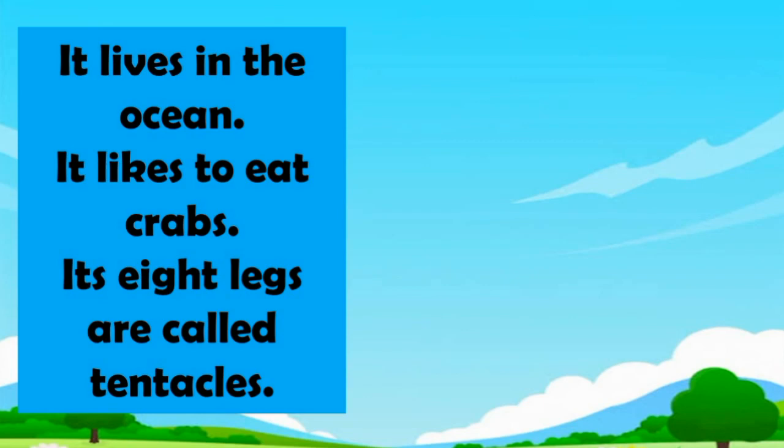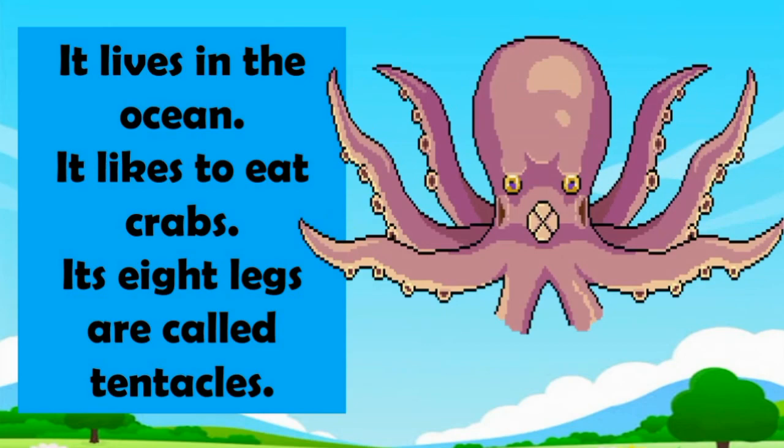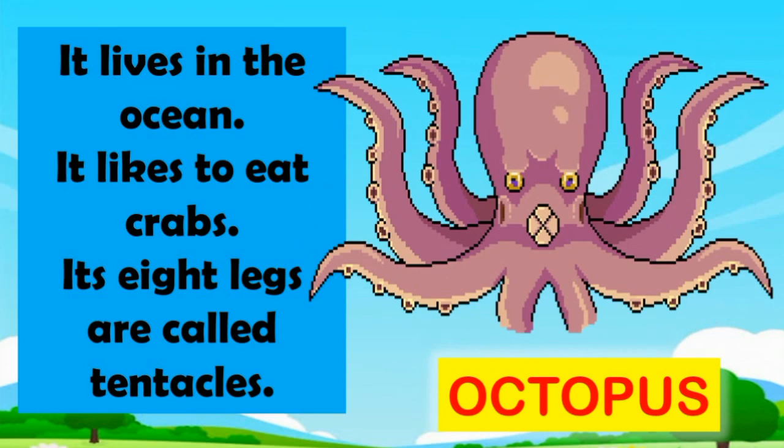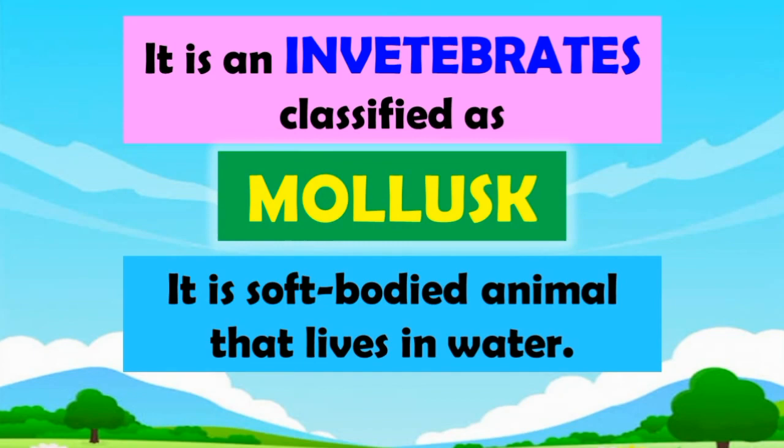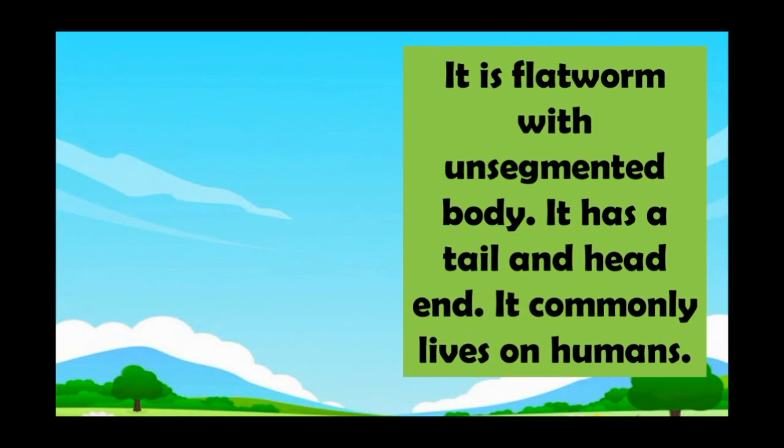Guess what? It lives in the ocean. It likes to eat crabs. Its eight legs are called tentacles. What do you think is it? Octopus! Correct! Octopus is an invertebrate classified as mollusk. It is a soft-bodied animal that lives in water.